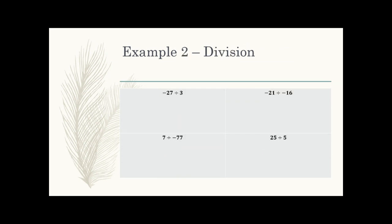Now for division examples. Top left: negative 27 divided by 3. I have one negative sign, so I'm going to have a negative answer. 27 divided by 3 gives me 9, so the answer is negative 9.